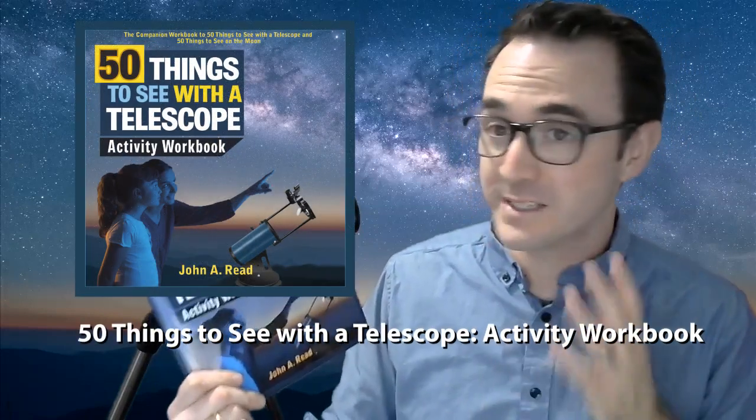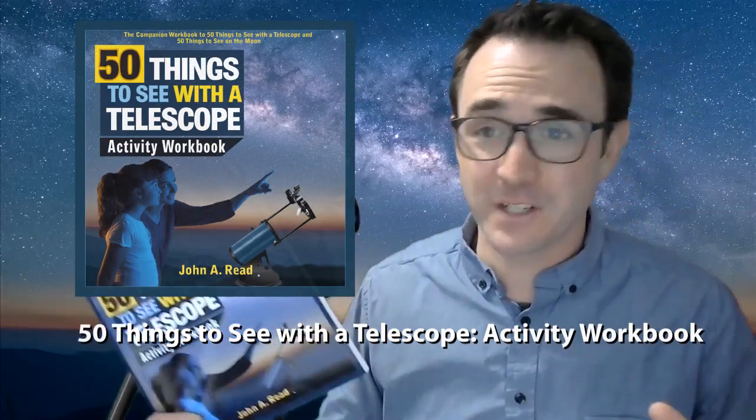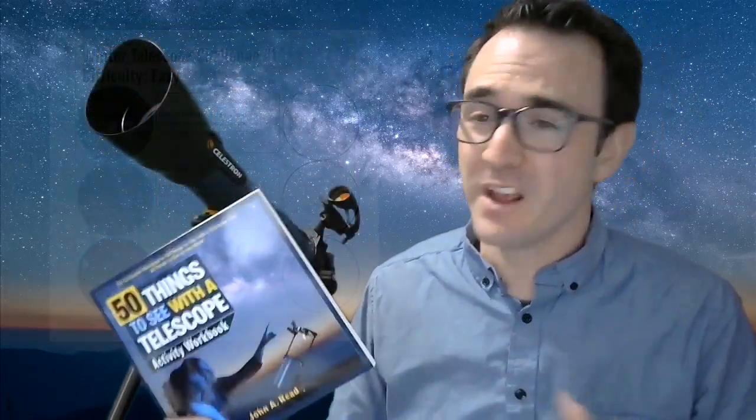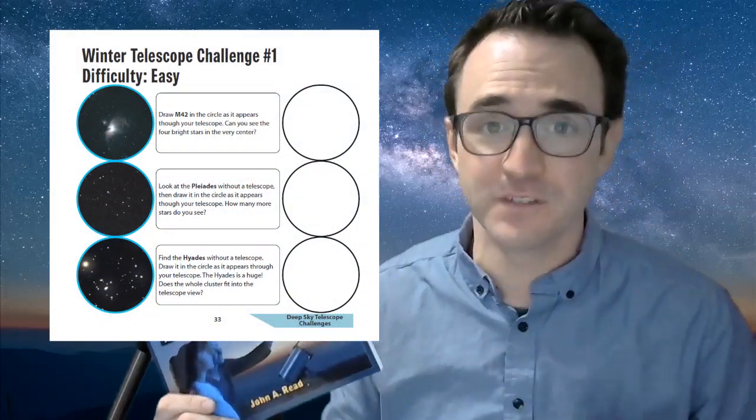If you want something inexpensive that you can toss into a large pocket, check out 50 Things to See with a Small Telescope. This is actually the first book I ever published. Now, if you want to record your progress as an amateur astronomer, and I highly recommend you do, I recommend 50 Things to See with a Telescope the Activity Workbook. This is especially good if you're an educator or homeschool parent. There are over 50 activities that you can do with your students.